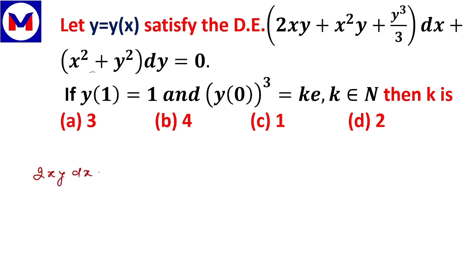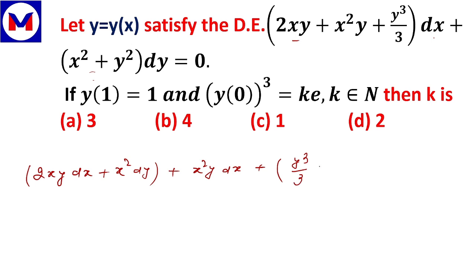We can rewrite the equation by grouping: 2xy·dx + x²·dy forms one group, and y²·dy equals zero, identifying the exact differentials within the equation.